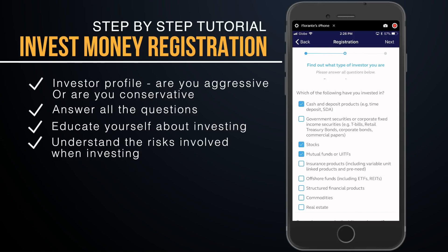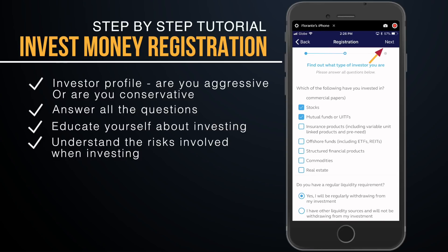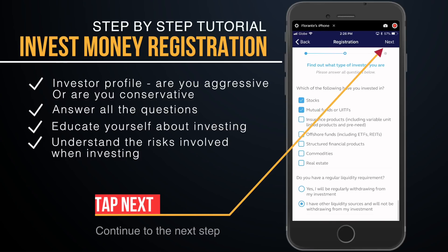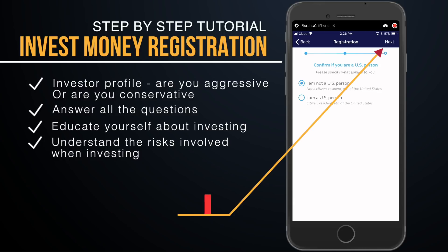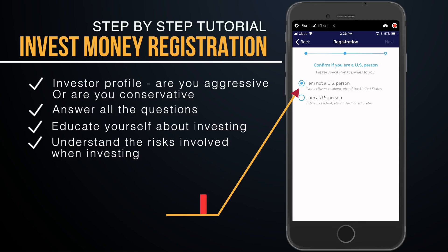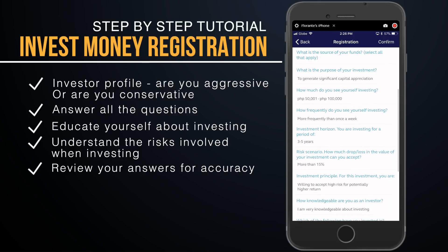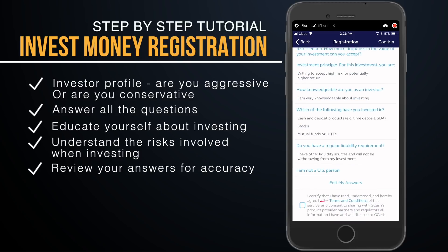Once you have filled out and answered all these questions, you just have to click on Next. Then you can go ahead to the question about whether you are a U.S. person or not, and click on Next. Then review the answers that you have entered.